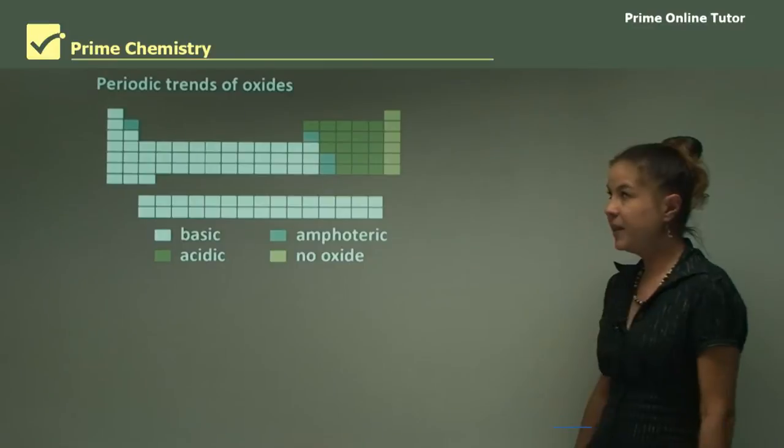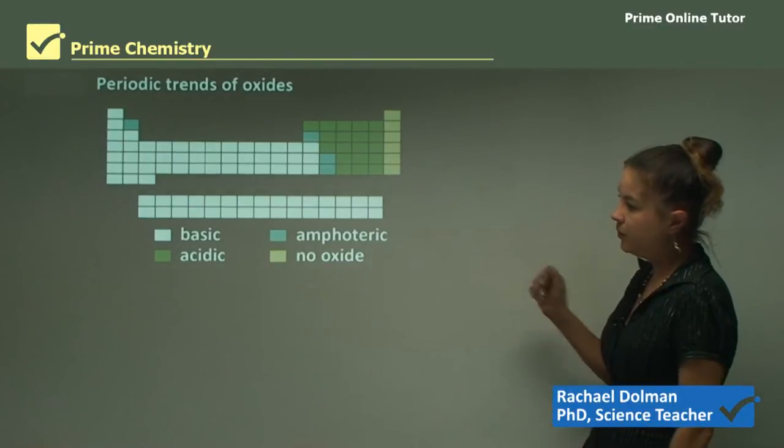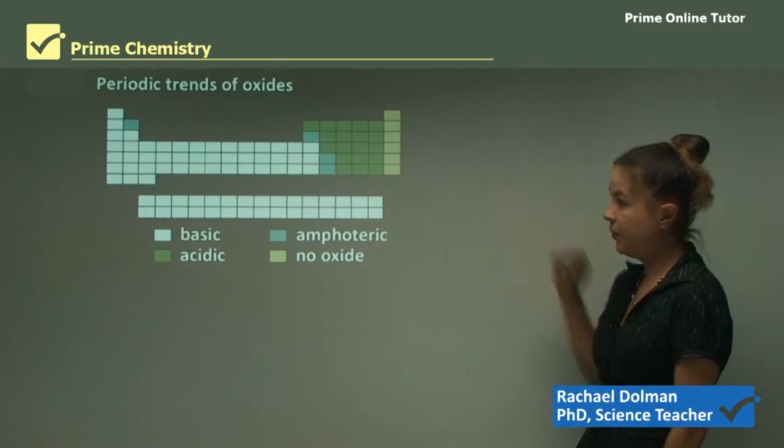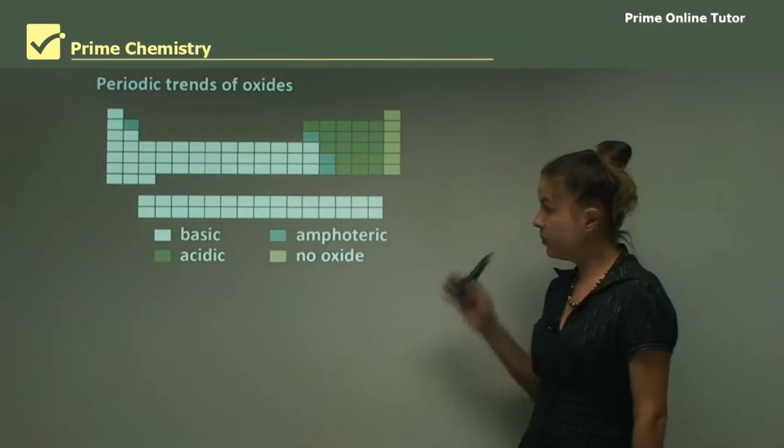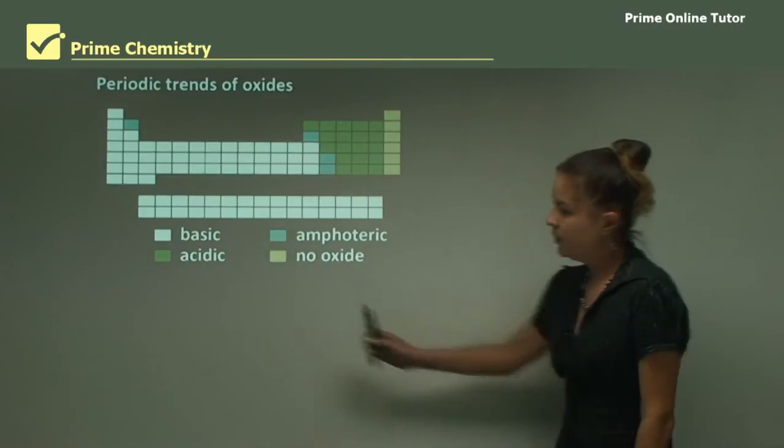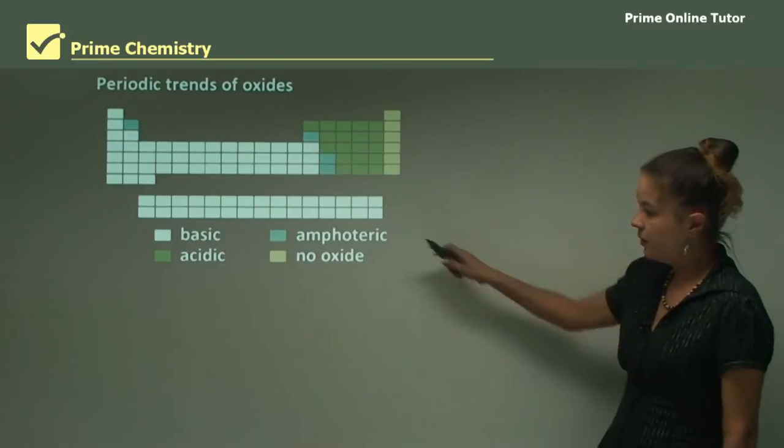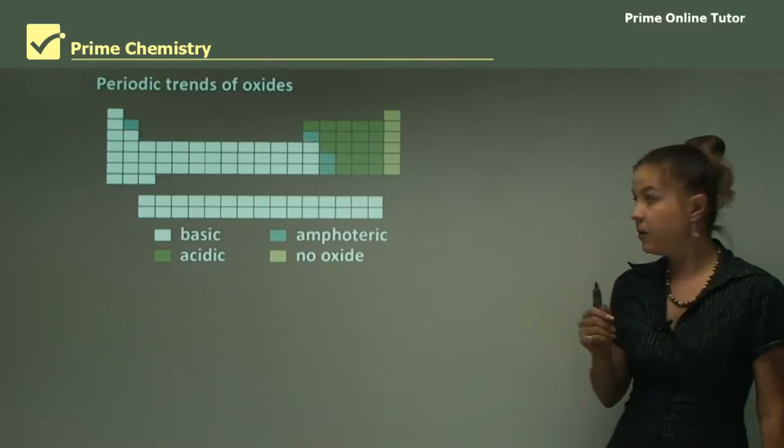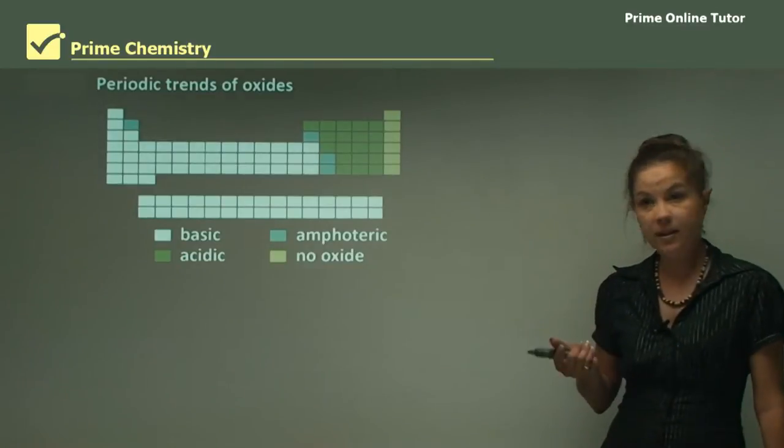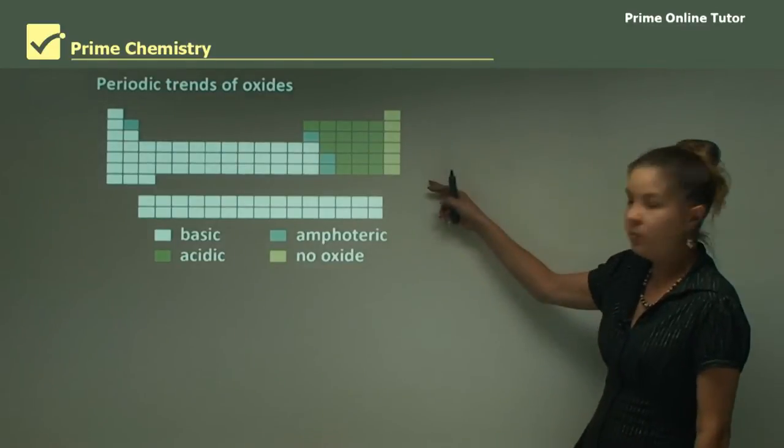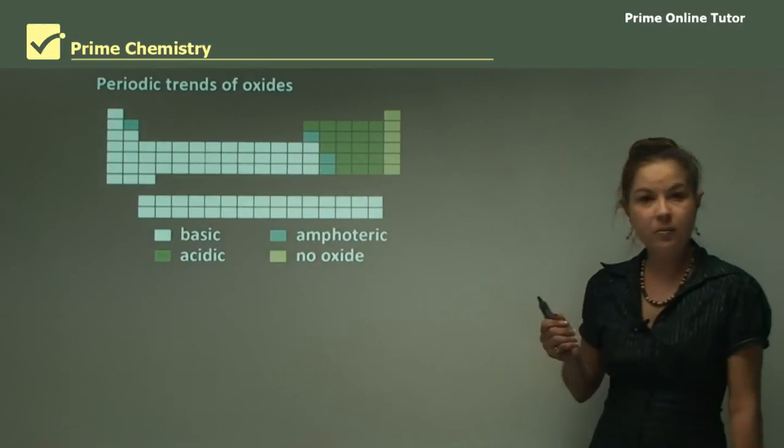In this lesson I'll be looking at periodic trends of oxides. We've already looked at different oxides in the periodic table. You've got basic oxides which are generally metals, acidic oxides which are mostly non-metals, a few amphoteric oxides which can act as acids or bases such as lead and zinc, and the noble gases which don't form any oxide because they're already stable and won't react.